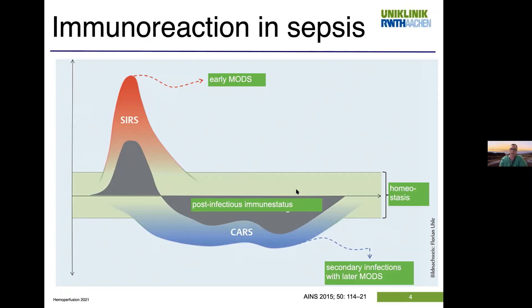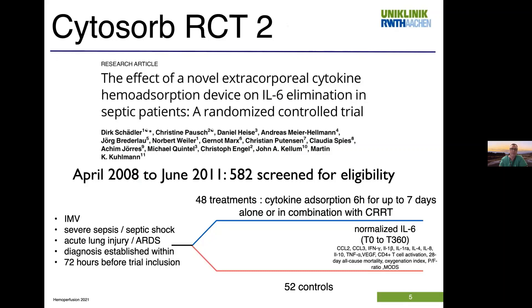We have seen trials from different producers of hemoperfusion devices, like the CytoSorb RCT2 that ran from April 2008 to June 2011. 580 patients were screened and only around 100 included. These were patients severely sick on mechanical ventilation in septic shock with ARDS. The trial aimed at including patients within 72 hours after diagnosis — which is three days, and you might question whether that is a bit too late. Patients were treated with cytokine absorption for six hours up to seven days in combination with CRRT mostly or alone, and the main outcome was normalized IL-6 between those time points.